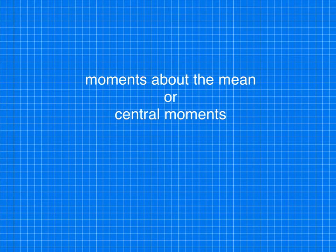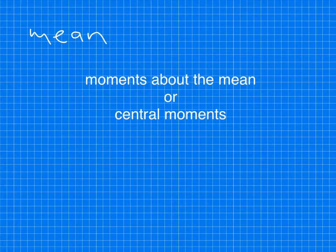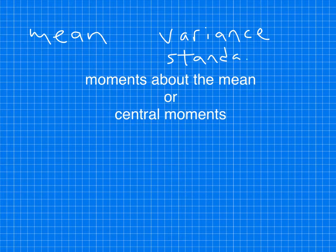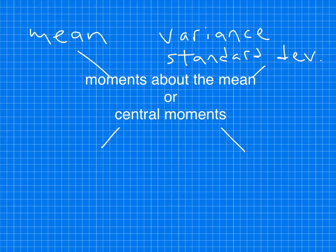We're going to talk about moments about the mean, also known as central moments — just two different names for the same exact thing. This is a useful concept because it connects together a lot of different ideas in statistics and how we measure data and summarize it. It's going to connect from what we've already learned about finding a mean, finding variance, and finding standard deviation, and also to a couple of new ideas that are really useful.